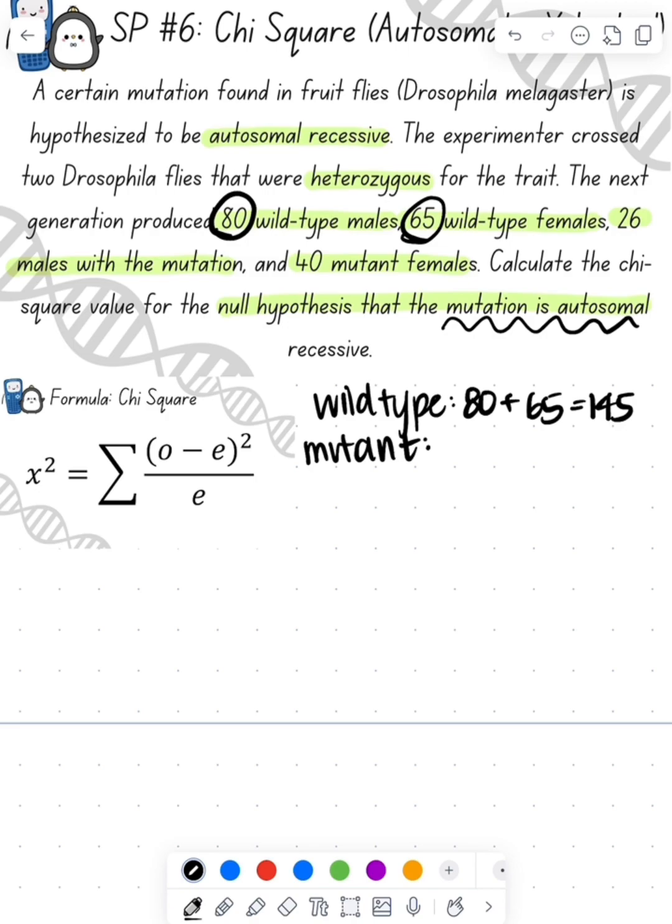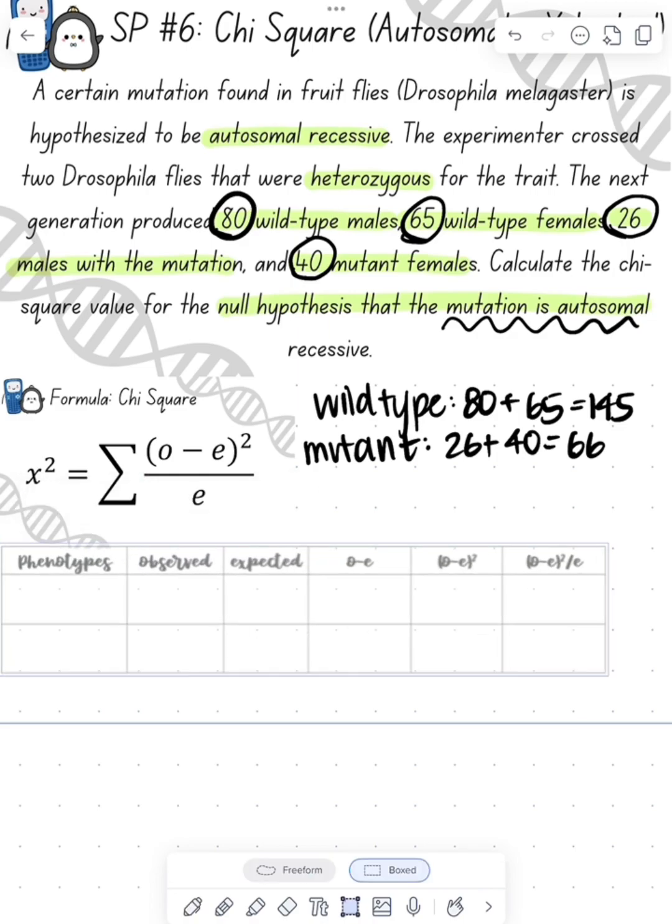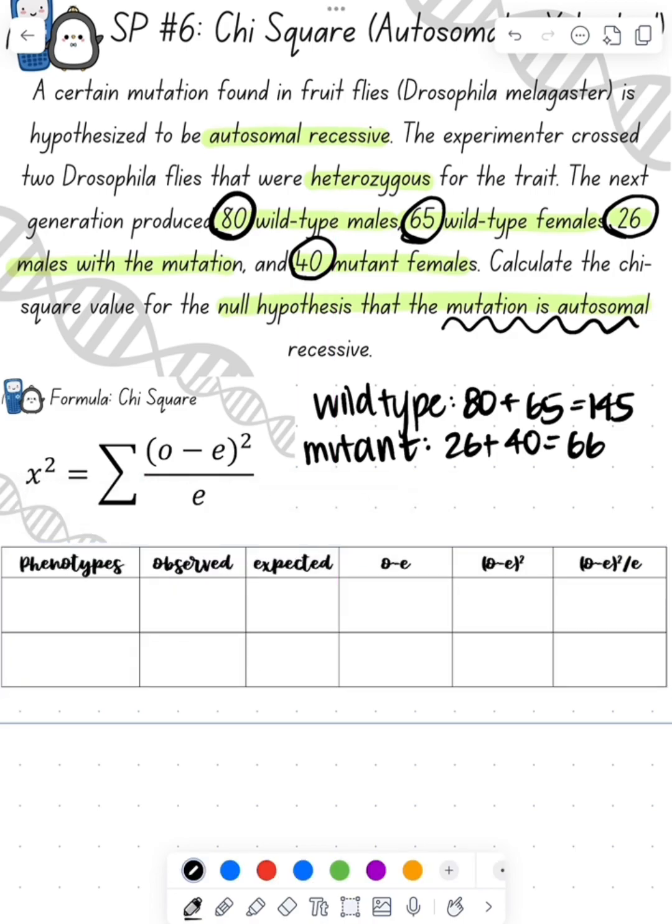We'll do the same thing with our mutant flies. So 26 male mutants plus the 40 female mutants gives us 66 mutant flies. Whenever I do chi-square, I always set up this little chart. So we put our phenotype, wild-type and mutants. We can see from this that we observed 145 that were wild-type, and there are 66 that are mutant.